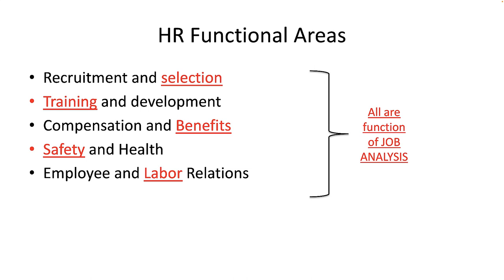Job analysis is the collection of information to form a formal report on what people actually do in their jobs. It's a scientific process designed to yield two related sets of information: a job description and a set of job specifications. A job description is the list of tasks and duties performed by a job incumbent. A job specification is a list of attributes required to perform the job — things you must bring with you, including experience, education, skills, knowledge, abilities, and other things.